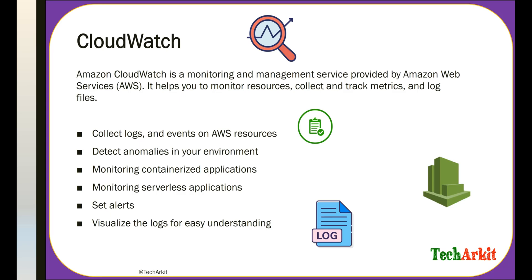CloudWatch handles logs, events, alarms, metrics, and many other things. It detects anomalies in your environment, monitors containerized applications and serverless applications such as Lambda, and allows you to set alerts — for example, if CPU utilization goes above 80%, you can configure CloudWatch to send an alert.